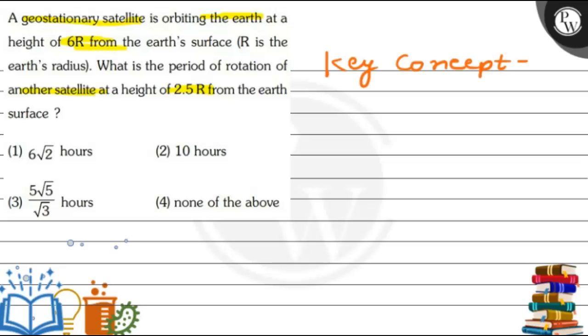The key concept is Kepler's third law, which states that the time period squared is directly proportional to the average radius of the orbit cubed. That means the farther the planet, the longer the time period. From this we can write that T1 squared upon T2 squared will be equal to R1 cubed upon R2 cubed.